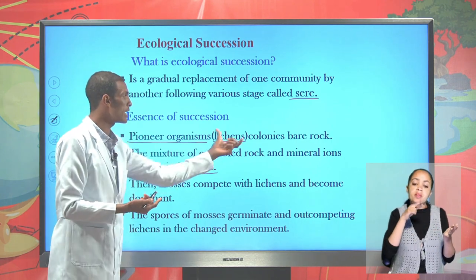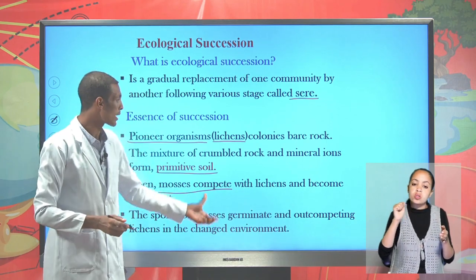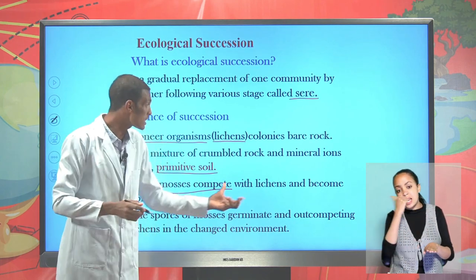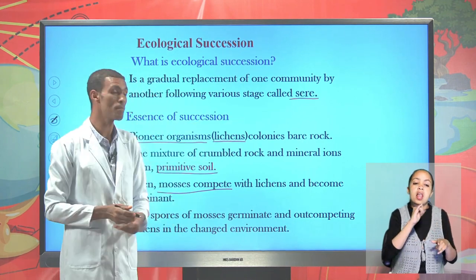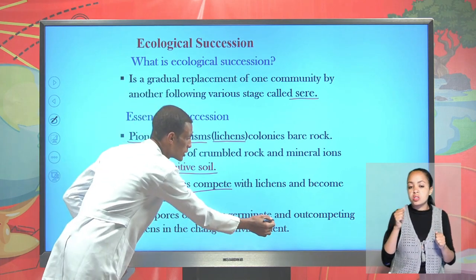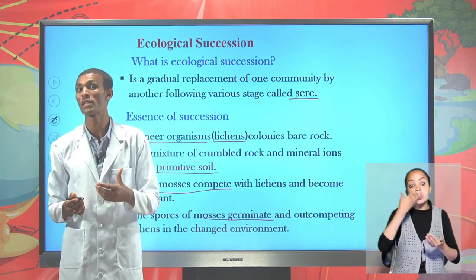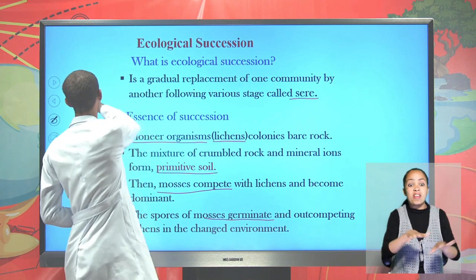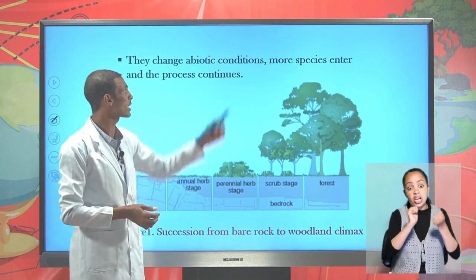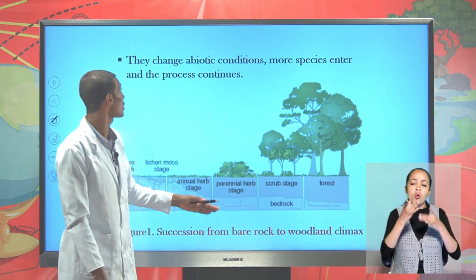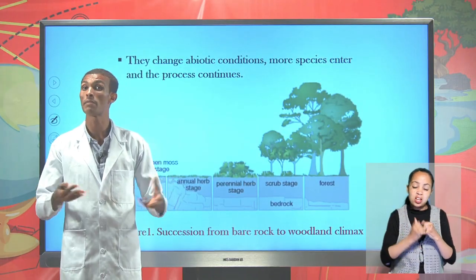The pioneer community including lichens becomes outcompeted by another community which is moss. When one community passes, the next community can create certain favorability for the next stage. Lichens become outcompeted by moss; where moss germinates, it changes the physical environment of the area, making it suitable for another community. The process continues until the final, stable community becomes established.